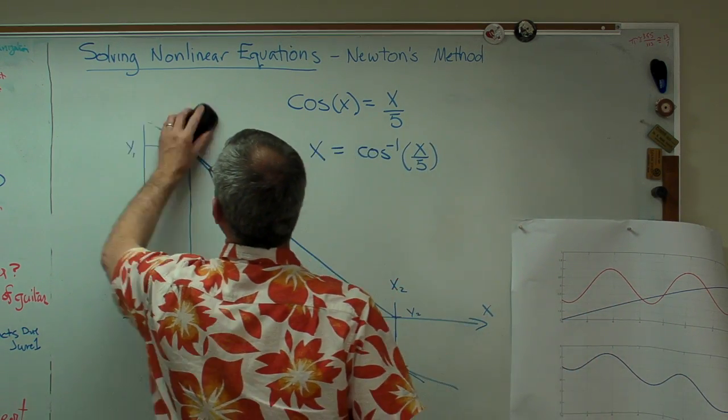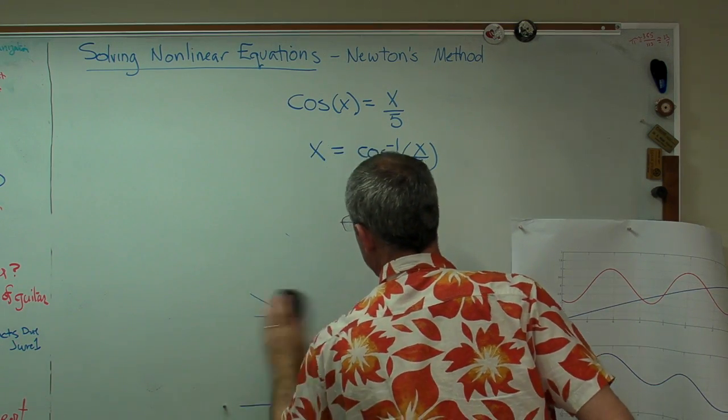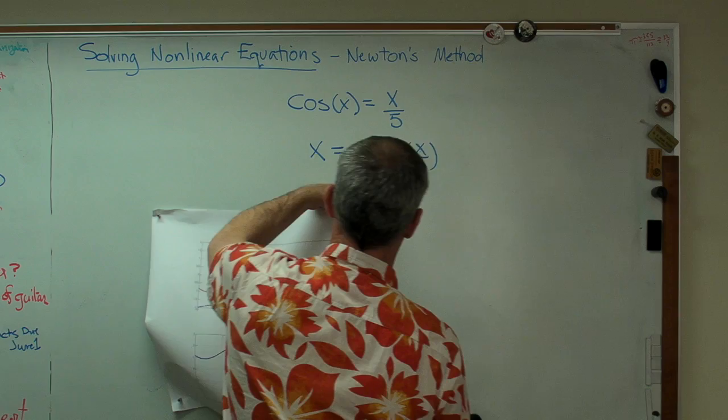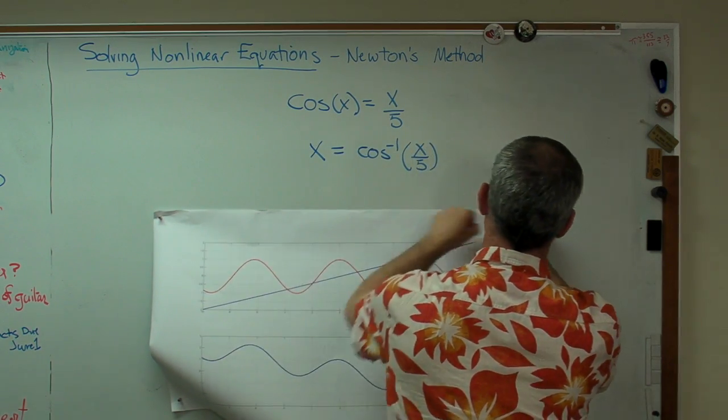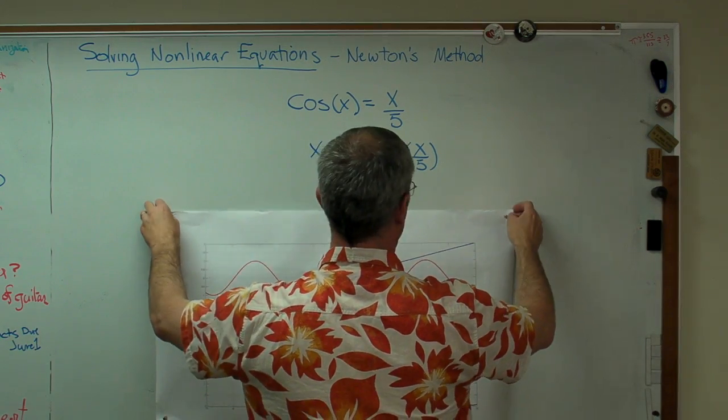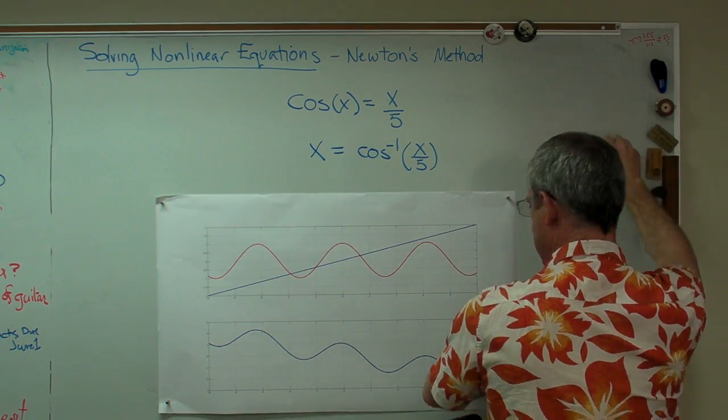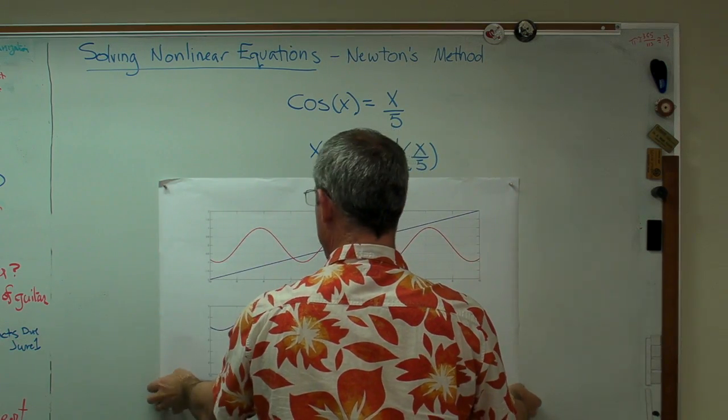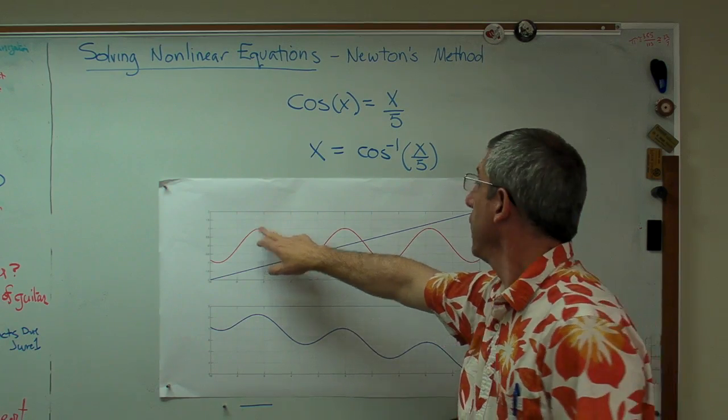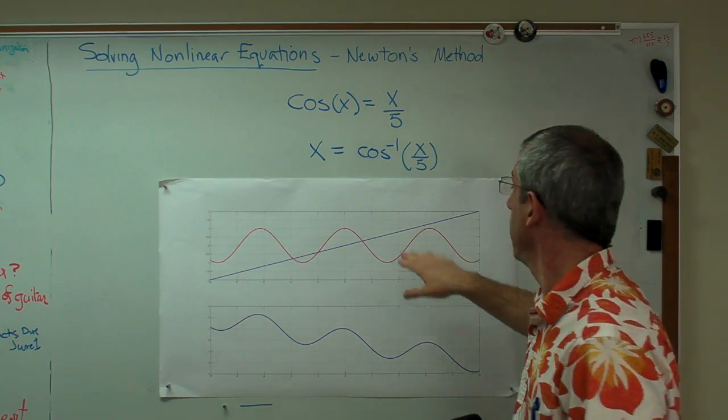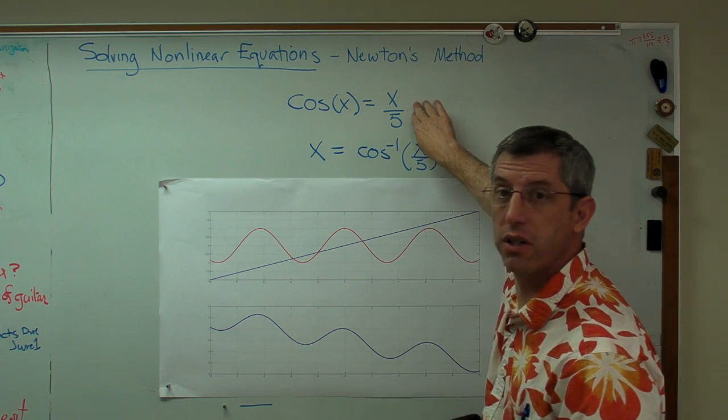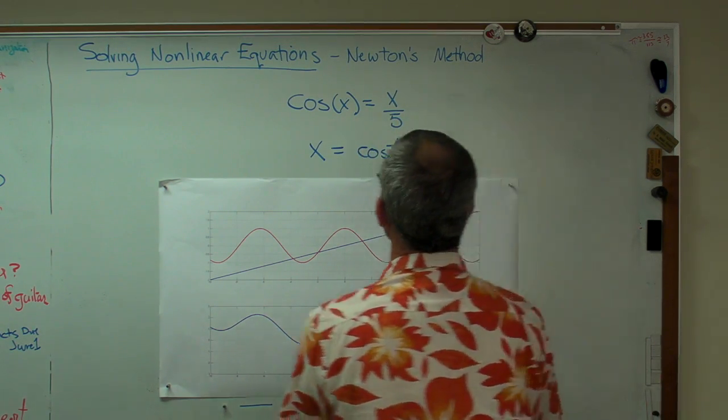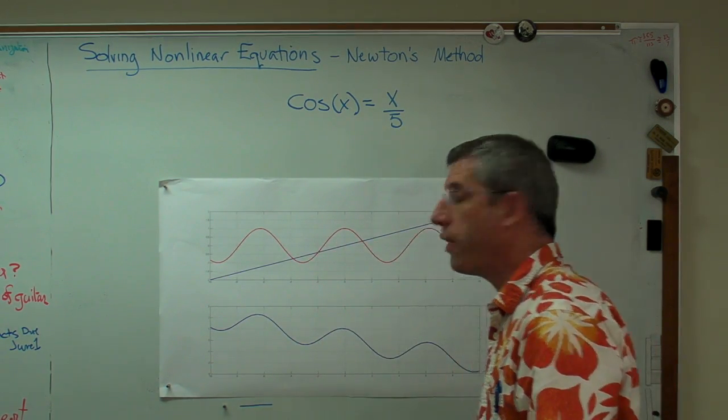So let's try that. Now I actually printed out a copy of some functions here. I haven't tried this before, so let's see how this works. There's the equations we're looking for. Let me move those up a little bit. What I did here, there's actually two expressions. This red line right here is cosine of x. And this goes from minus ten to ten. This straight blue line here is x over five. So wherever the red line and the blue line cross each other, this expression is true.